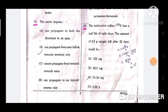Question number 23: The radioactive iodine has a half life of 8 days, the amount of 0.5 gram sample left after 32 days would be? The correct answer is option C, 31.25 milligram.